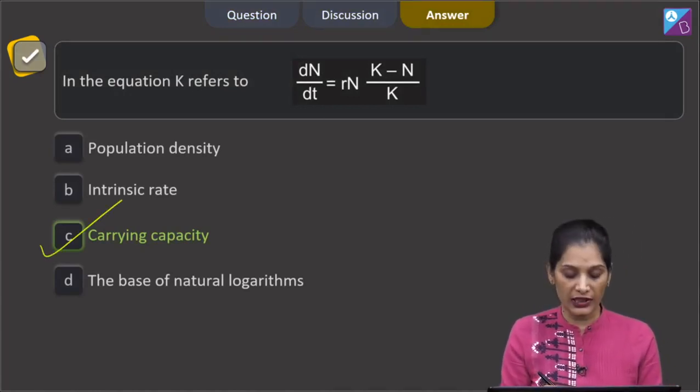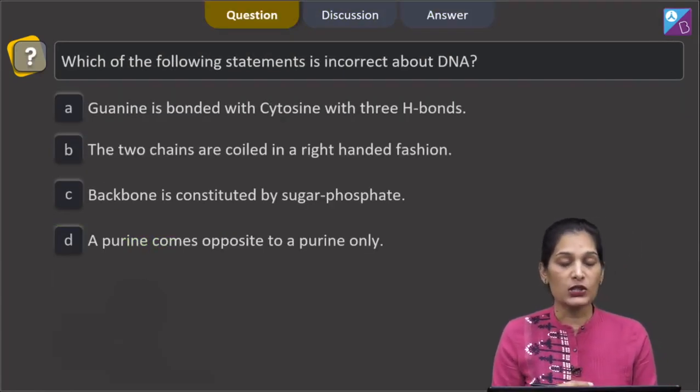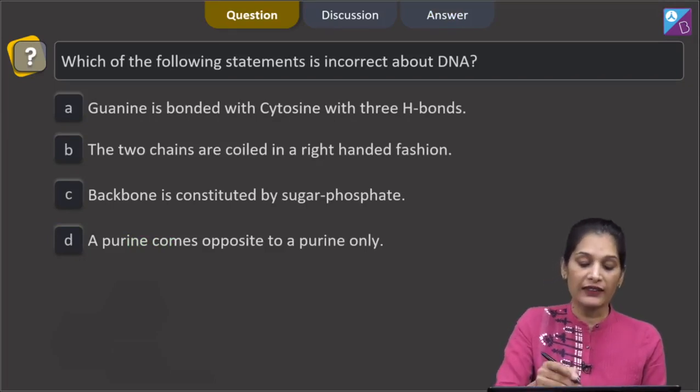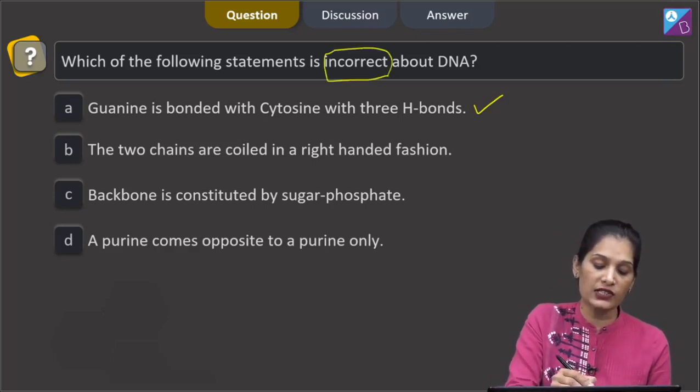Let us move to the next question. This question says which of the following statements is incorrect about DNA. Guanine is bonded with cytosine with three hydrogen bonds. This is correct statement but the question is asking about the incorrect statement.